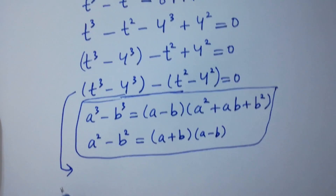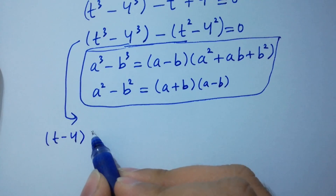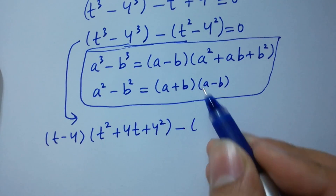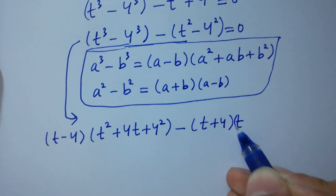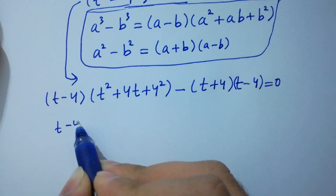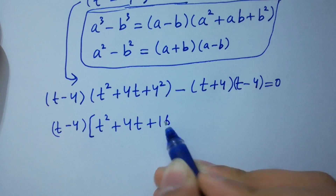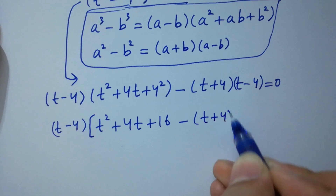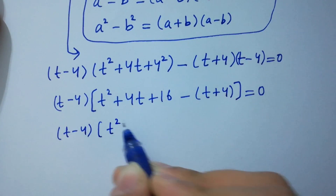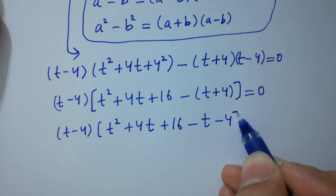Applying these identities: (t minus 4)(t square plus 4t plus 16) minus (t plus 4)(t minus 4) equals 0. Here (t minus 4) can be taken as common, giving: (t minus 4)[t square plus 4t plus 16 minus (t plus 4)] equals 0, which simplifies to (t minus 4)(t square plus 3t plus 12) equals 0.